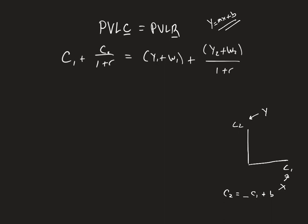So let's work with that. We're going to try and solve this out for c2. Well, the first thing is, let's go ahead and get rid of these denominators. We don't want any fractions in here, so we're going to multiply both sides by 1 plus r.